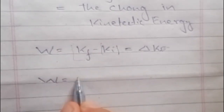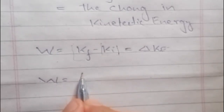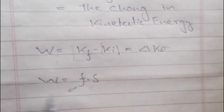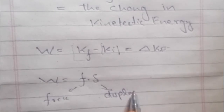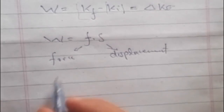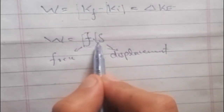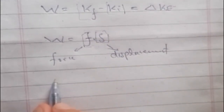Let's prove this equation. We know that the work done is equal to F·s, where F is the force and s is the displacement. Now, when the force is constant, we will deal only with s.